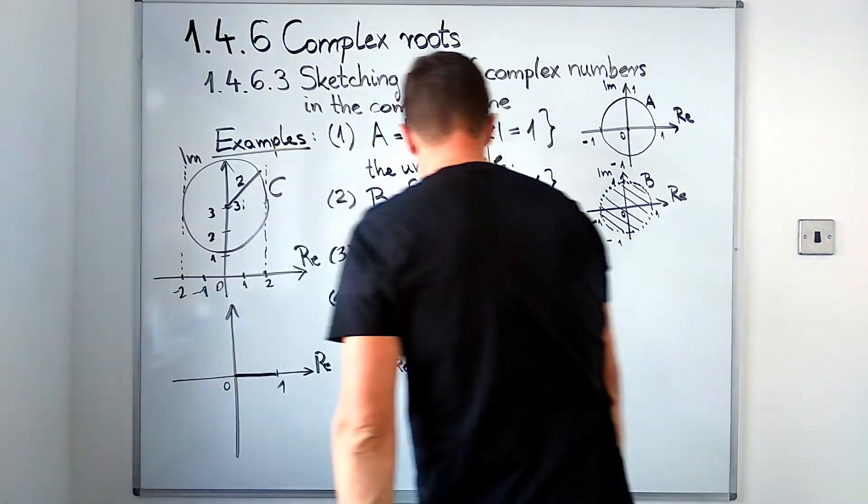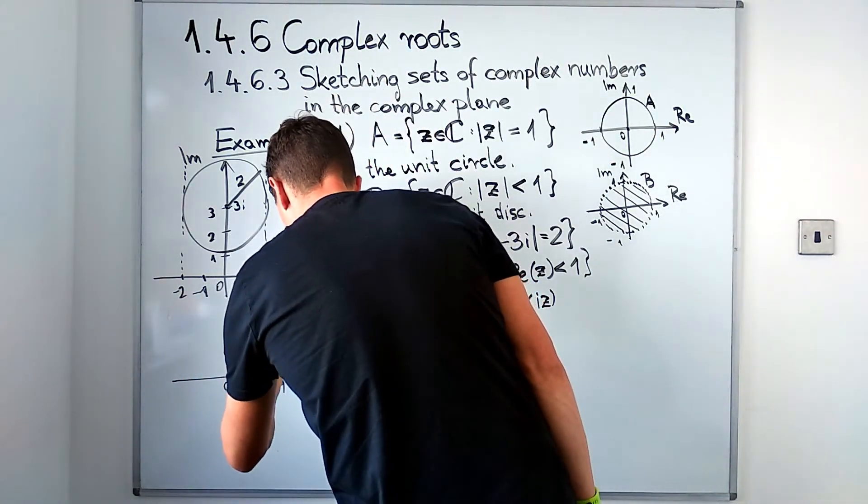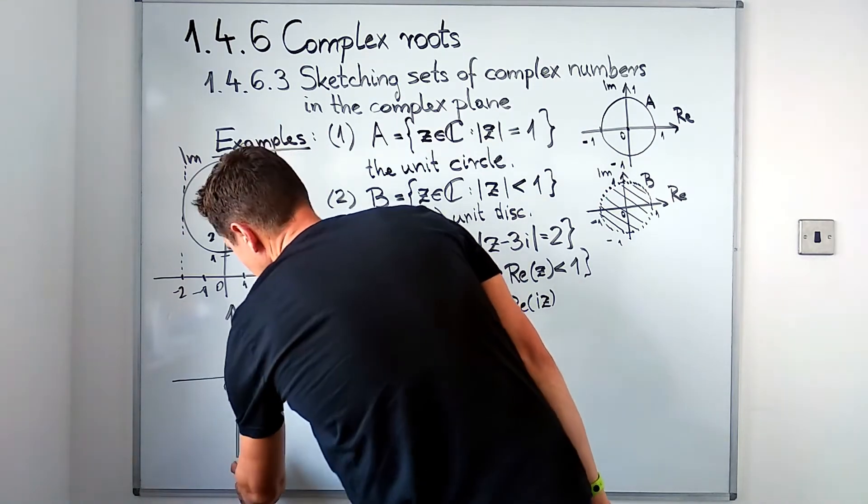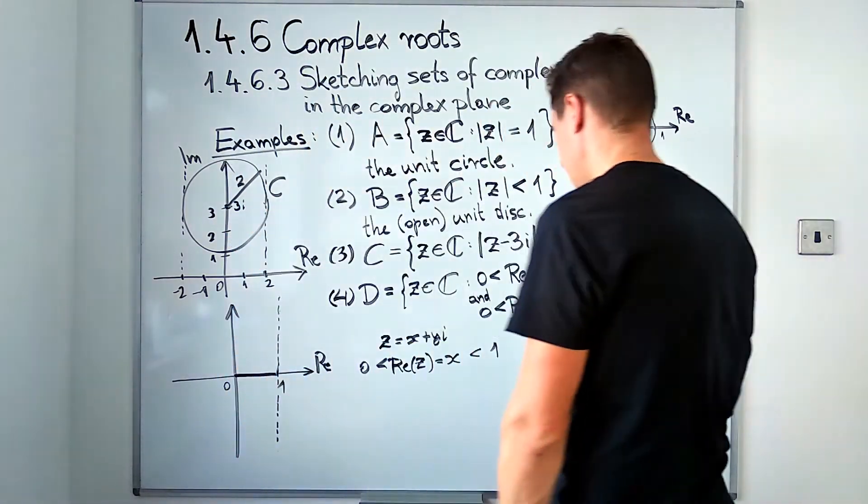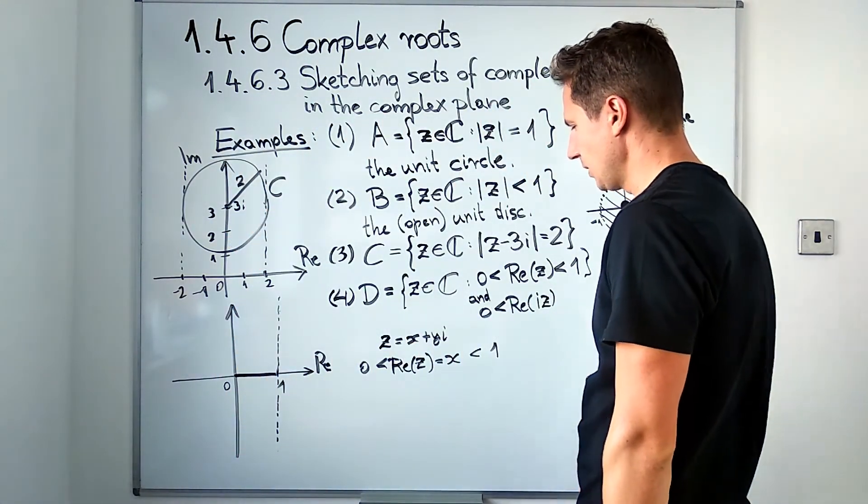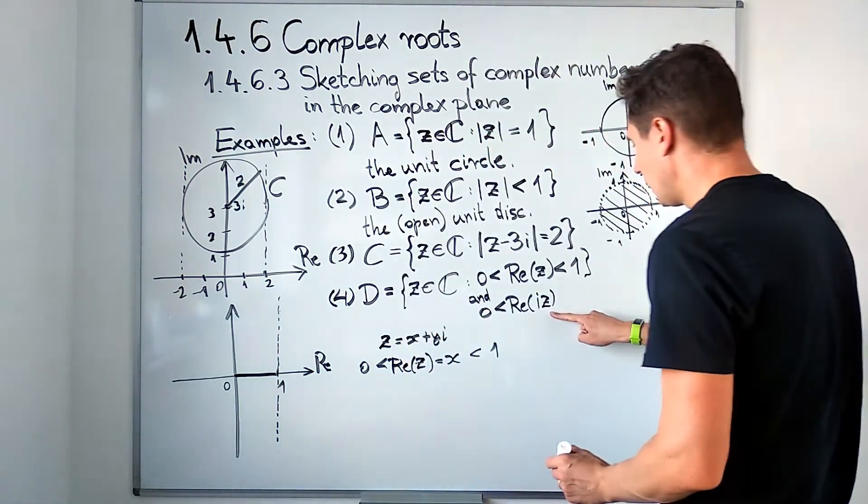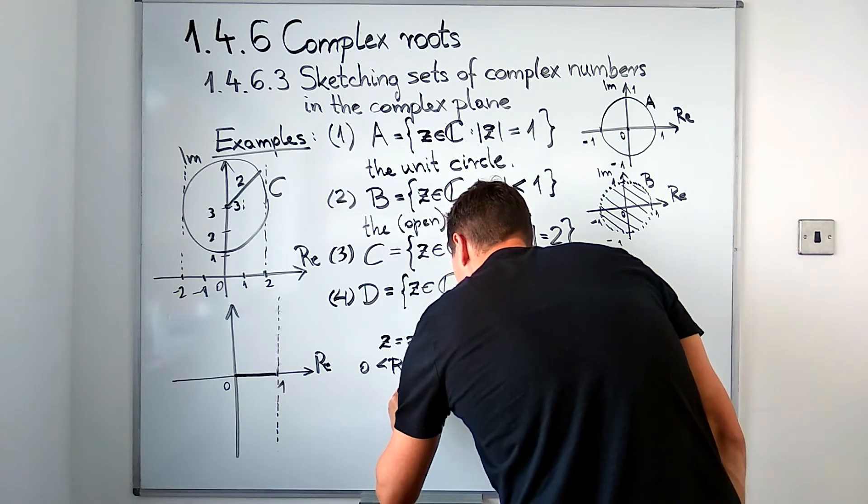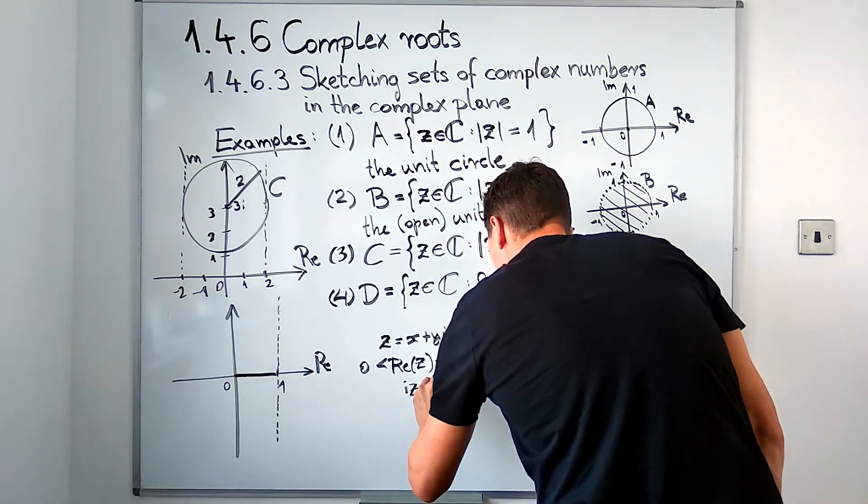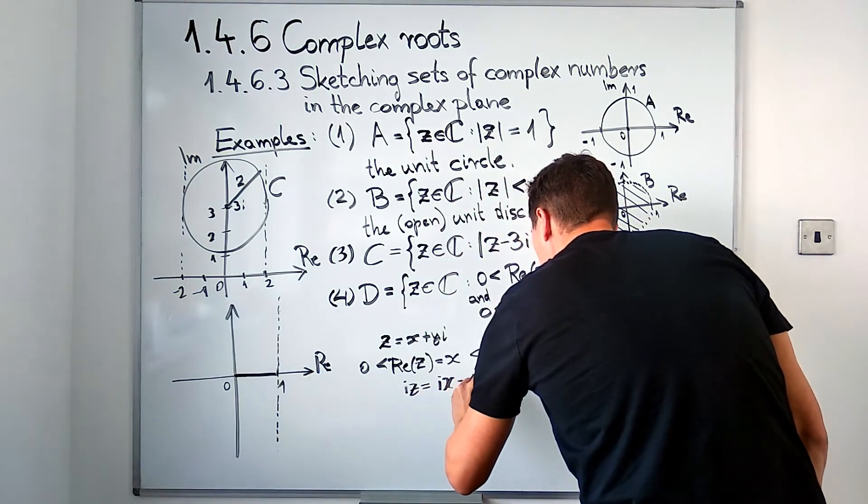So between zero and one, we are looking at these points on a strip basically. All of these points in this strip have horizontal coordinates between zero and one.